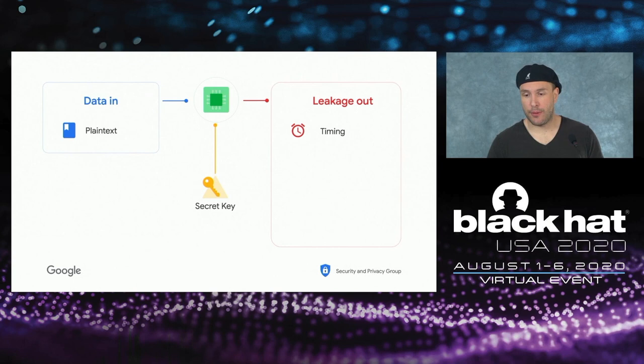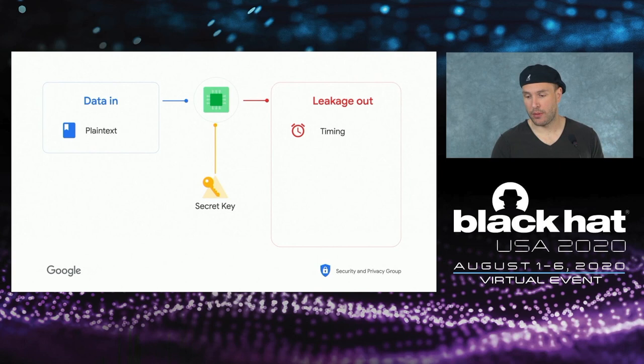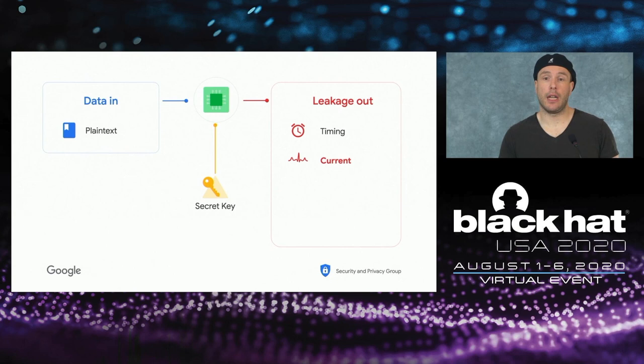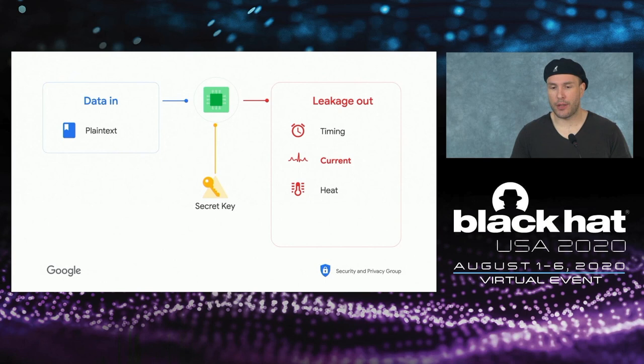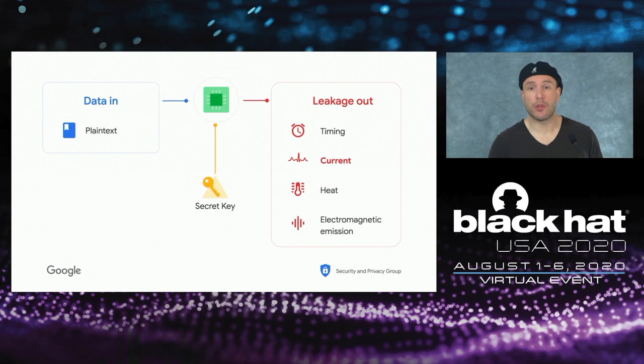For example, the algorithm will take some time, and unless it's protected against timing and is constant-time, you'll see different execution times based on the input. Similarly — and that's the one we'll focus on — you might have leakage due to power consumption. Depending on what operation is done, you get different power consumption patterns that you can extract. You also have electromagnetic emission, which is another powerful way to extract and recover a key.